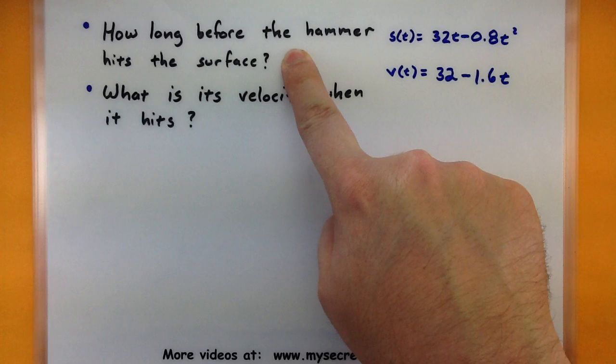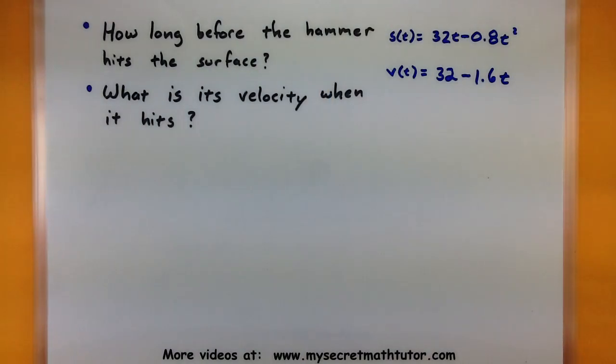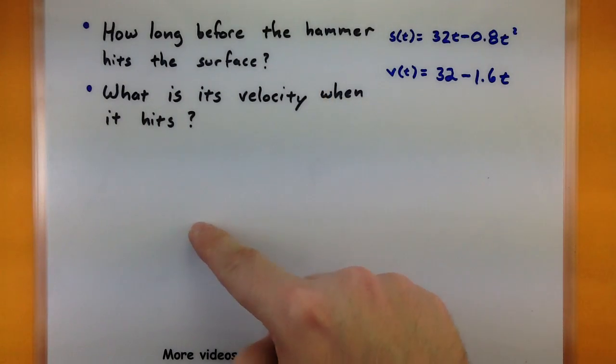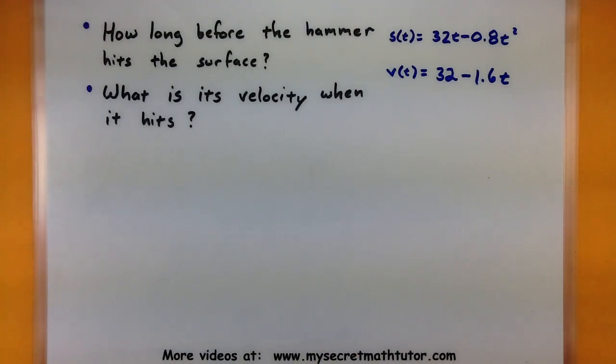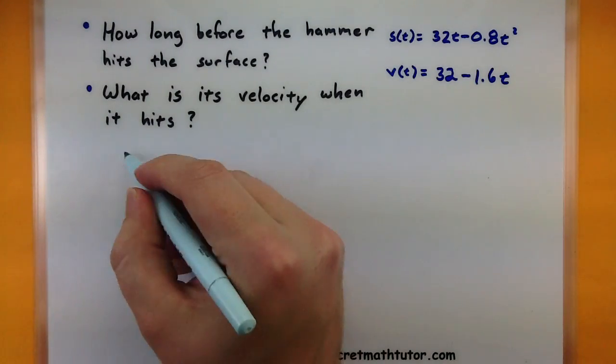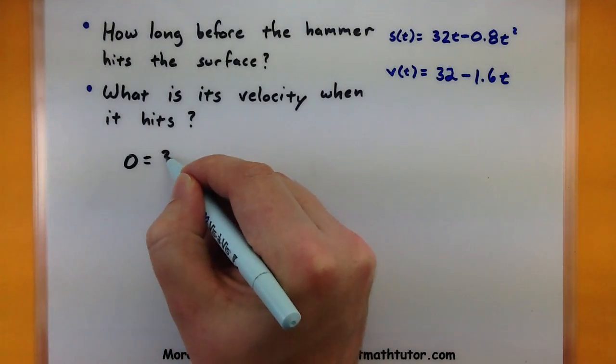To answer this first part, we want to know when the height will be 0. If it does this nice parabolic motion and eventually hits again, that's a spot where the height will be 0. So let's grab our position function and see where this thing could equal 0.